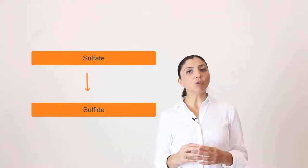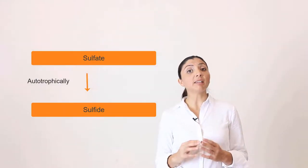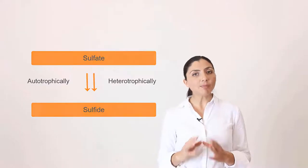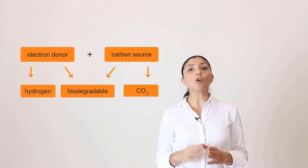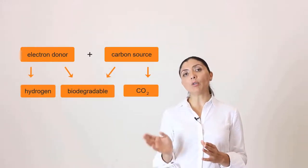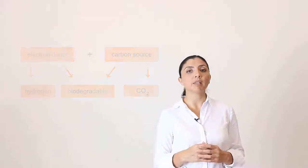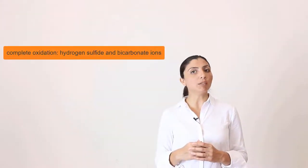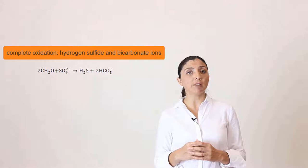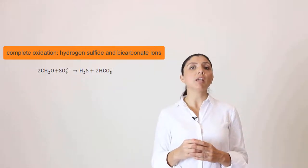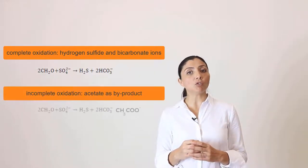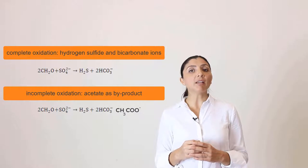They are capable of reducing sulfate autotrophically and heterotrophically. This means that they can use as electron donor and carbon source hydrogen and carbon dioxide or biodegradable organic compounds. The outcome of this metabolism is hydrogen sulfide and bicarbonate ions in the case of complete oxidation, and when incomplete oxidation occurs, also acetate as a by-product.